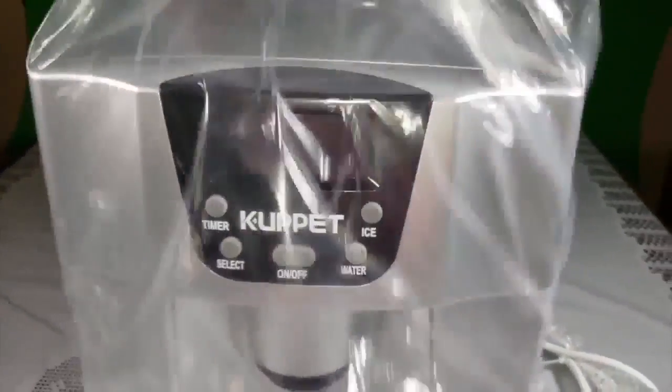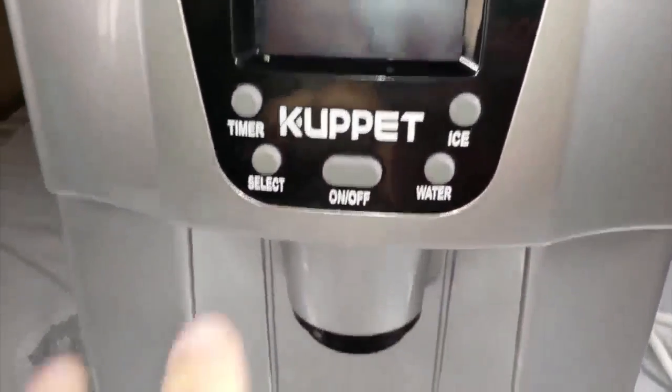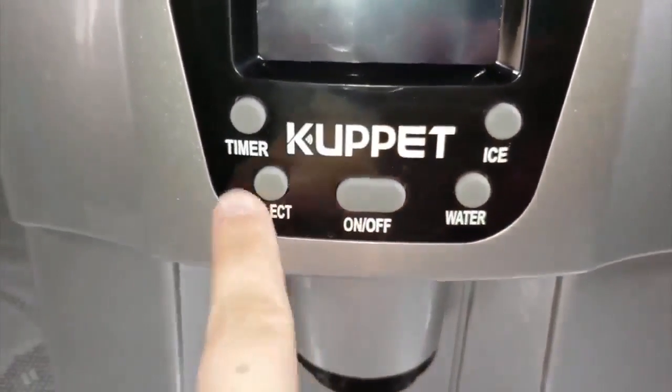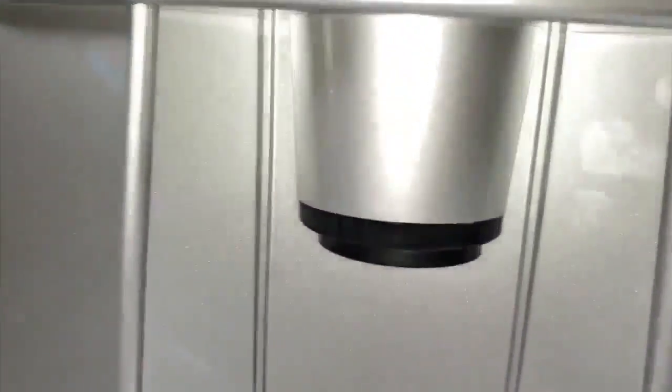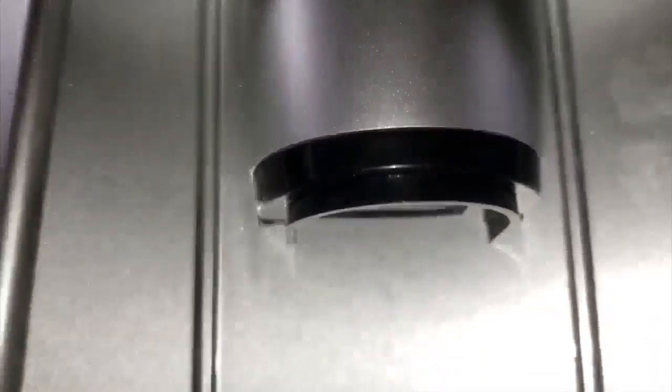As you can see right here, you have your timer, your select button, your on and off. There's your ice button, your water button, and down here is where the ice will come out once you click on the ice button.